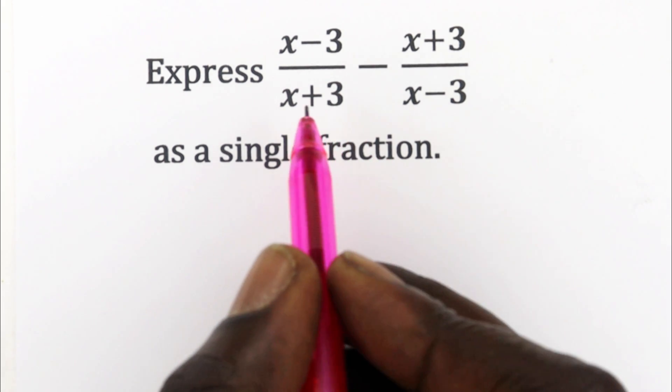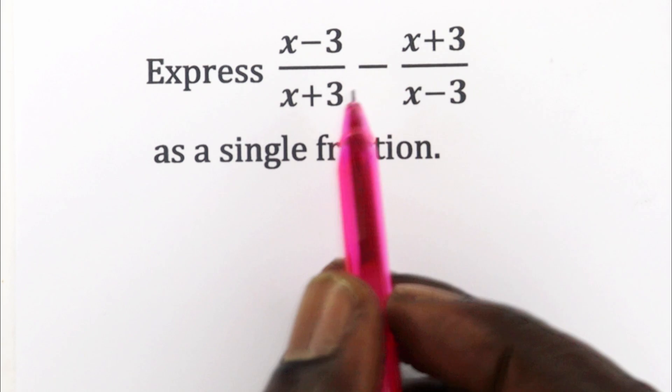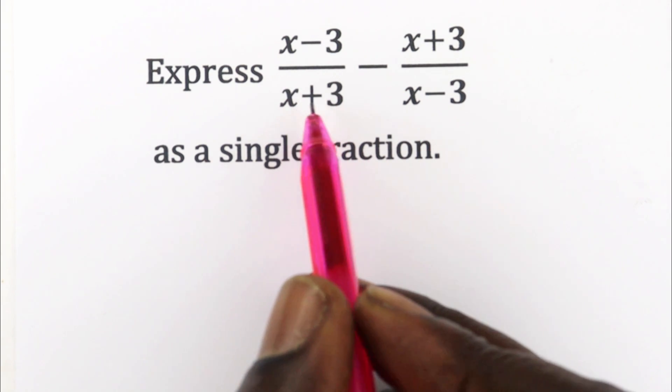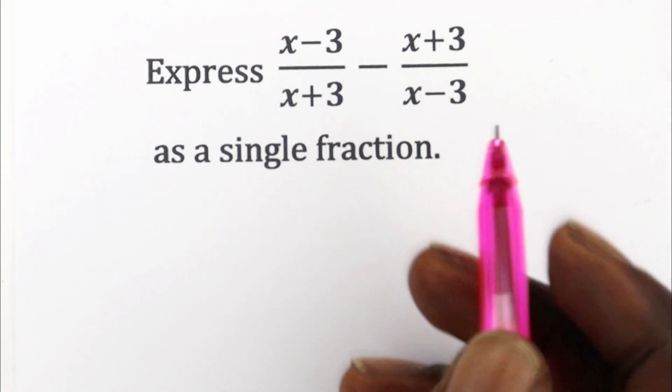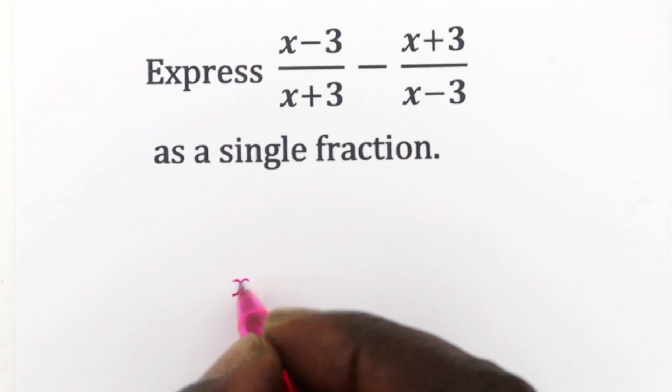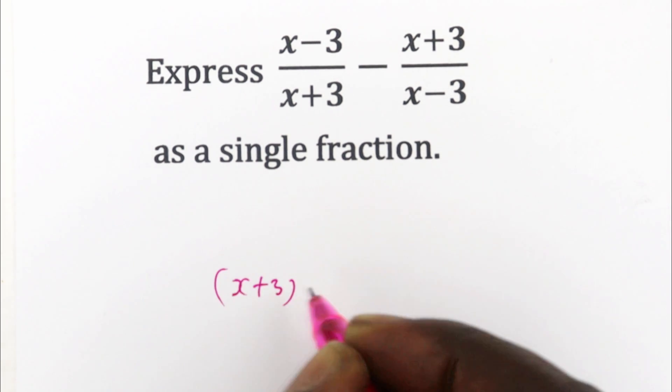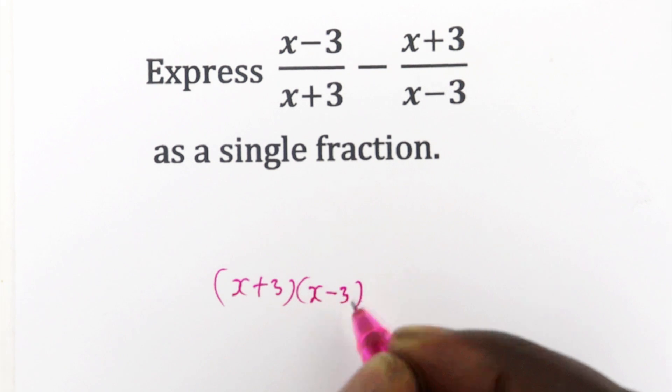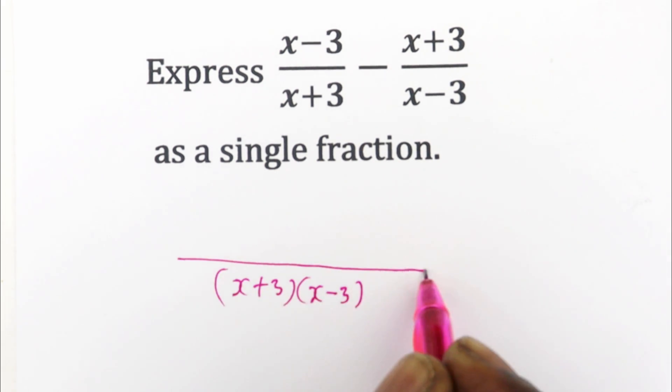So let us just take the LCM of these two, which is (x + 3) times (x - 3). So you have (x + 3)(x - 3) as the LCM.